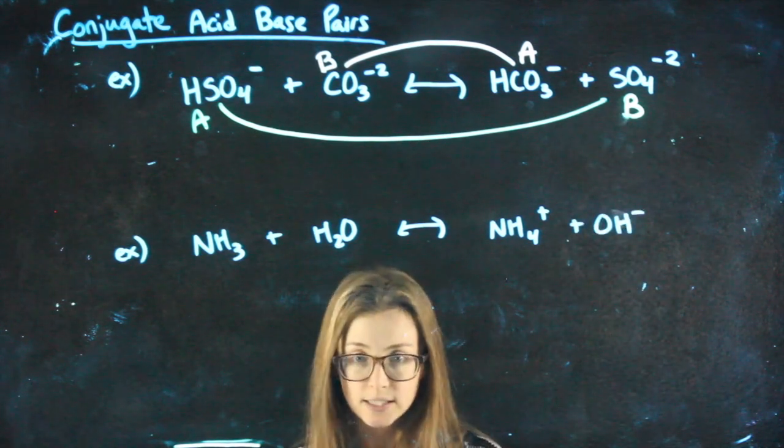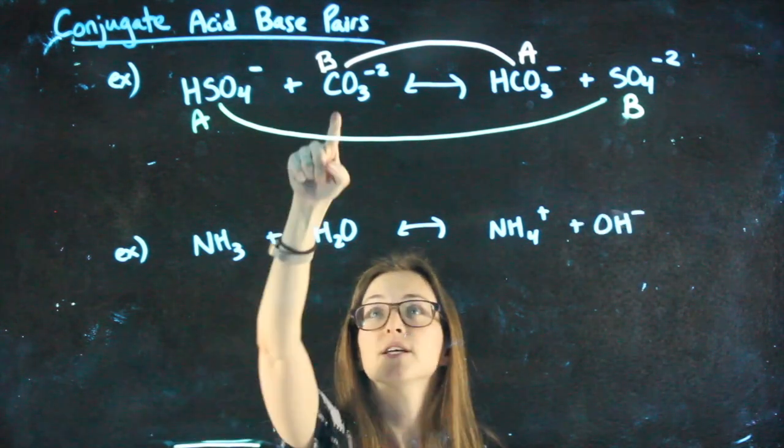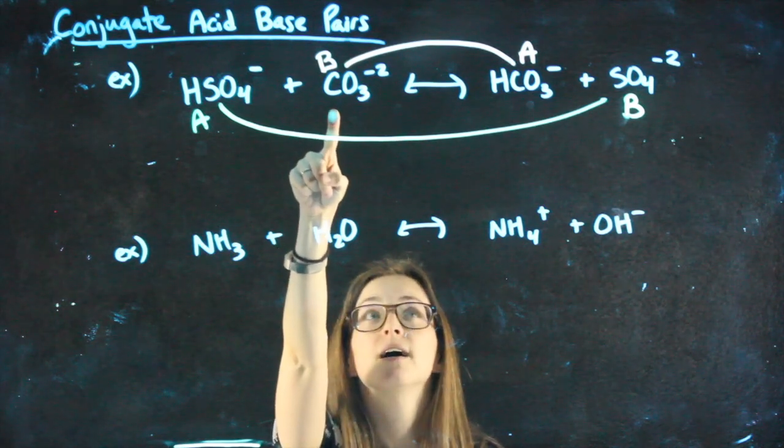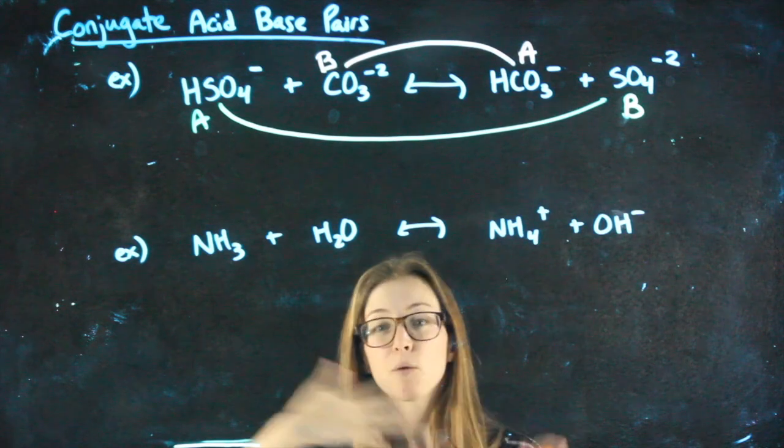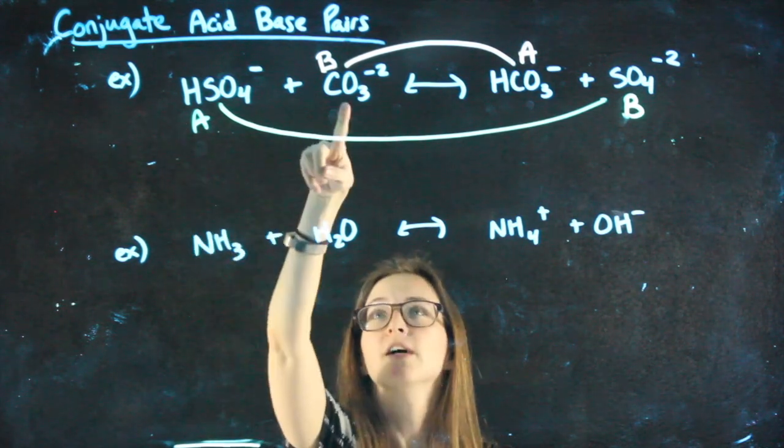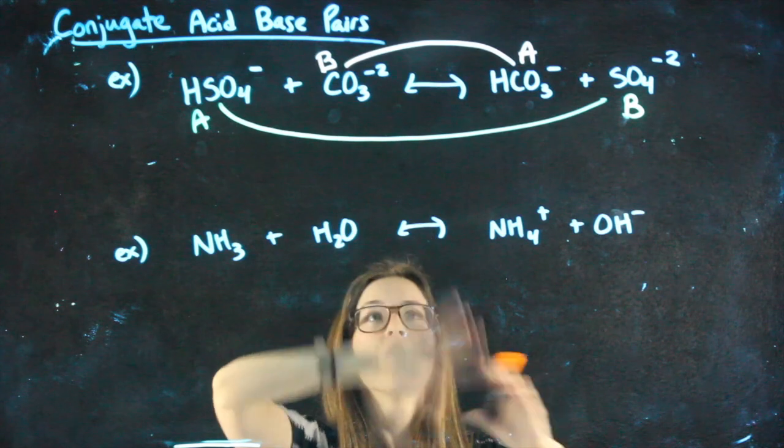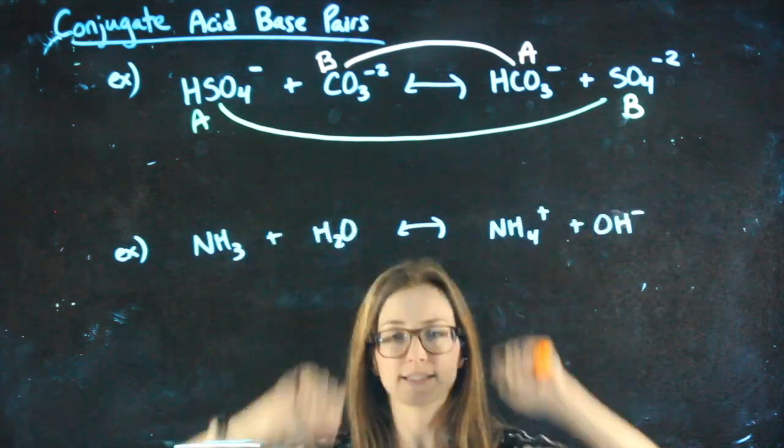According to the Bronsted-Lowry definition, we know that bases gain H+. So this was our base on the left-hand side. Over the course of the reaction, it gained an H+. What's actually happening here is this acid is losing an H, this base is gaining that H, and we end up with two acid-base pairs.